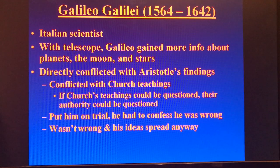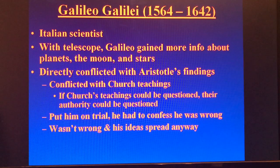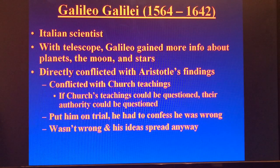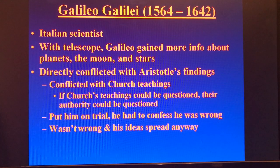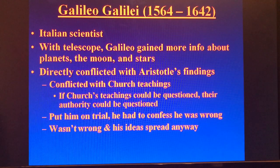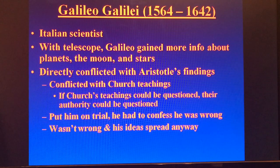So Church officials put Galileo on trial and gave him a choice: confess that you were wrong and say the Church is right, or we will kill you. Galileo came to an easy decision and said he was wrong — he recanted all of his findings. Of course, he wasn't wrong, and all of his fellow scholars knew that. So his ideas started to spread anyway, and the Church's actions kind of backfired because Galileo's work spread regardless.